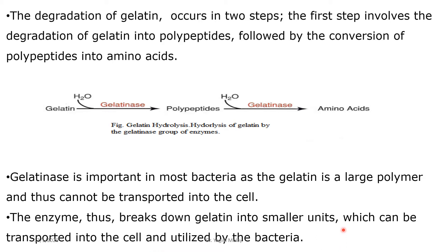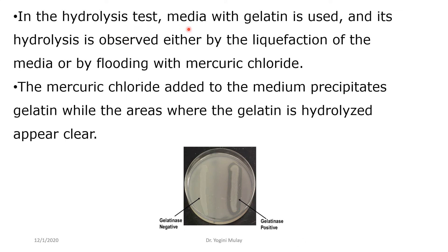Gelatinase produced by an organism helps in two ways: it helps in the breakdown of gelatin into smaller units so that amino acids can be taken up by the bacteria, and it also serves as a virulence factor to help complete the pathogen's pathogenesis. In the hydrolysis test, media containing gelatin is used and its hydrolysis is observed either by liquefaction of the media or by flooding with mercury chloride.